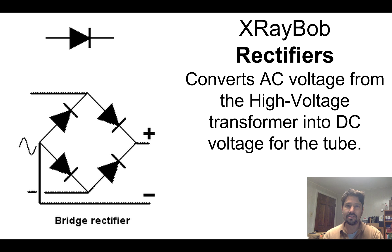All right, so they convert AC voltage from the high voltage transformer. So we stepped up the voltage to high voltage, and now we're going to convert it into this pulsating DC that we're going to use to feed our x-ray tube.